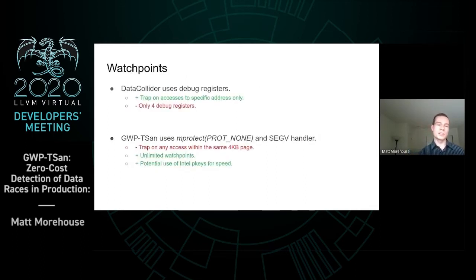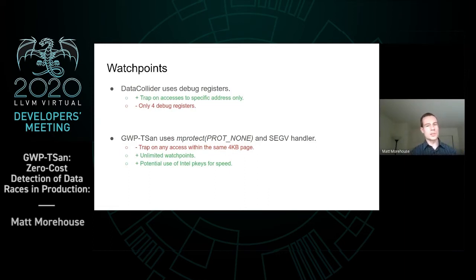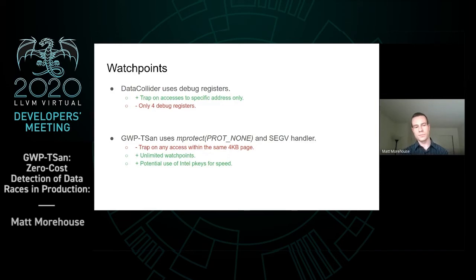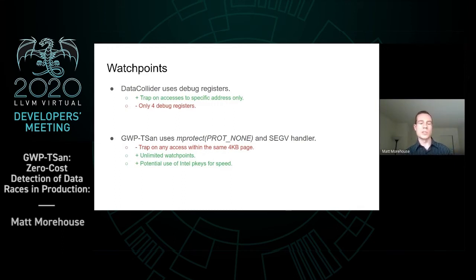A key difference between GWP-TSAN and Data Collider is the mechanisms used for setting watchpoints. Data Collider uses debug registers, which allows trapping on accesses to specific addresses. However, there are only four debug registers, which severely limits the number of watchpoints you can set, and it will also conflict with any tools that use debug registers for tracing. For this reason, GWP-TSAN uses mProtect PROT_NONE and a SIGSEGV fault handler to implement watchpoints instead. This has the unfortunate side effect that it will trap on any access within the same memory page, so even if two threads access different addresses with no actual data race, you'll still hit watchpoints from both. But the upside is you get unlimited watchpoints, and there's potential use of Intel P-keys to reduce the number of unnecessary traps.